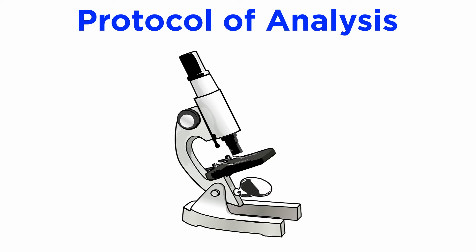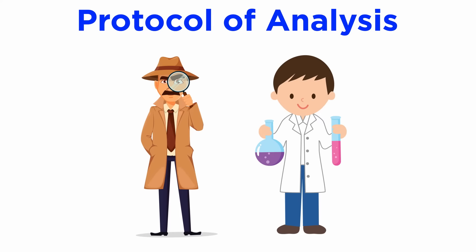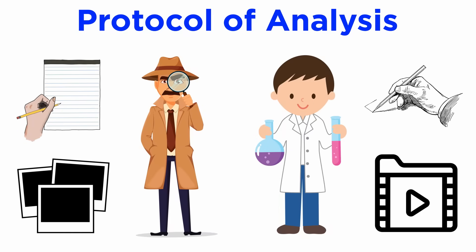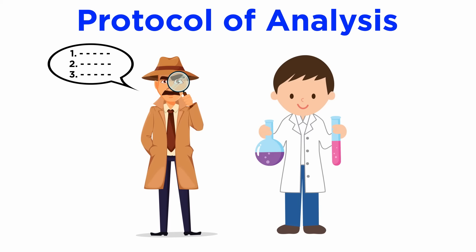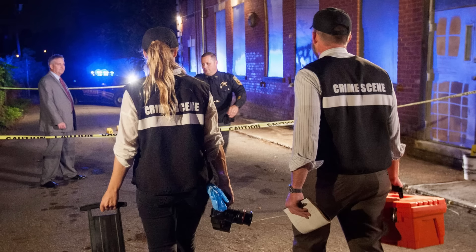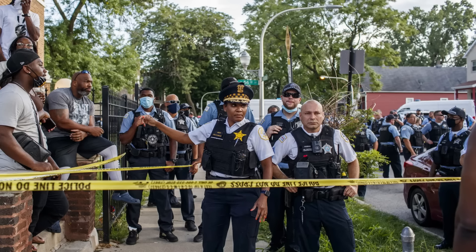The next step is to determine a protocol of analysis. The laboratory investigator communicates with the CS investigator to understand the observations related to the case. This is where notes, photographs, sketches, and video play an important role in placing the evidence in the context of the crime. Along with this, the CS investigator will discuss what kind of information is relevant or irrelevant. The plan of action will depend on facts surrounding the case, the nature of the crime, and information relevant to the crime, including witness statements.